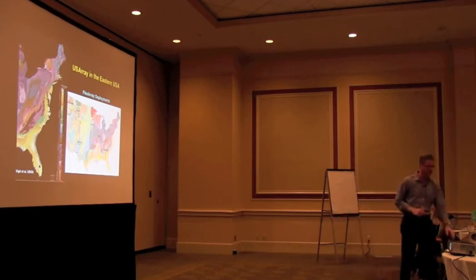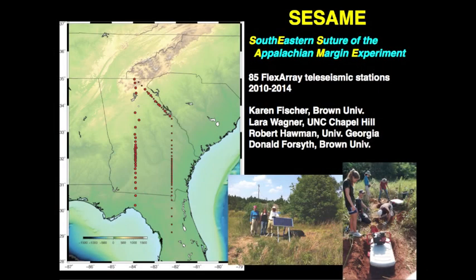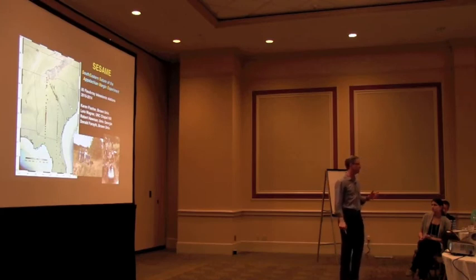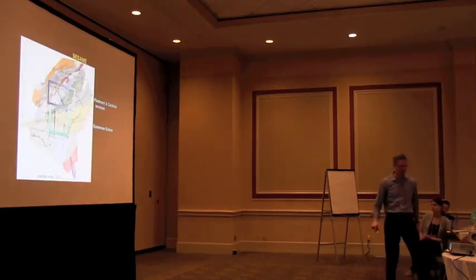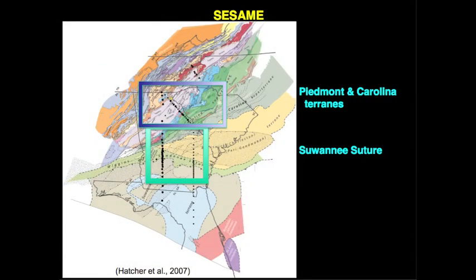So I just want to highlight quickly a couple of the FlexArray deployments as we move into the last phase of USArray. One of them is SESAME. Again, we have to have the acronyms, so I won't read through all these. This is run by Brown University, UNC Chapel Hill in Georgia. This is a series of transects. Again, these will be embedded within USArray, but very dense station spacing to get at some of the detailed structure. Here's an example, trying to get across the Piedmont and Carolina terrains, as well as the Sewanee Suture. And so really trying to nail down the structure of the interior of the crust and the mantle, as well. And these are only successful because they can put in those very dense lines, but also look at the background USArray data.